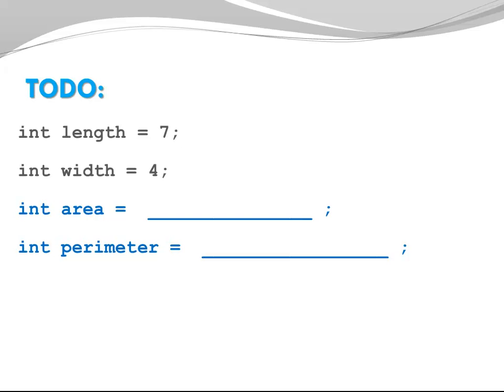One more challenge. I give you two variables. Integer length is 7. Integer width is 4. And I would like you to come up with an arithmetic expression that is using those variables length and width with some arithmetic operators to figure out the area and the perimeter of a rectangle. Give yourself a moment to think it through. Pause the video. When you're ready, press continue.